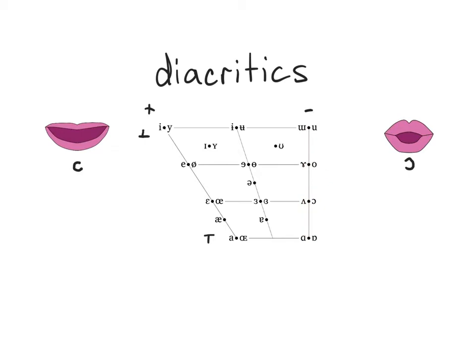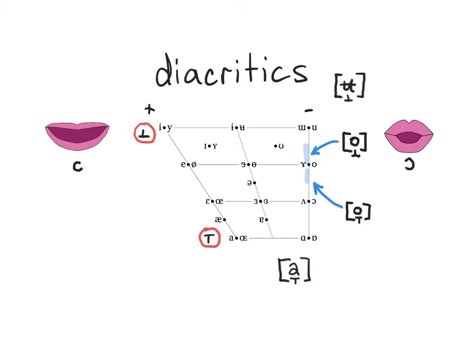The two small T diacritics are used under a base symbol to indicate that the vowel is pronounced higher or lower than its official IPA definition. As always, these diacritics cannot be used with a base symbol that would result in a physically impossible articulation.